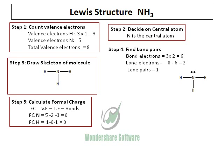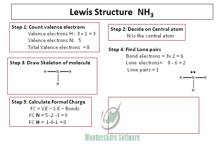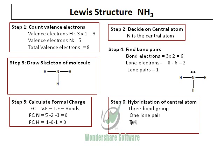After calculating the formal charge, we have to predict the shape of the molecule. In order to do that, we need to find out the hybridization. Let's count the electron groups on nitrogen. In ammonia, with nitrogen as the central atom, the electron groups are 3 hydrogens and 1 lone pair around it. Therefore, we have 3 bond pairs and 1 lone pair, making it an AB4 type molecule with SP3 hybridization.